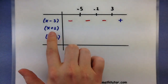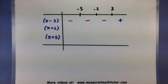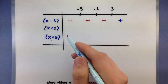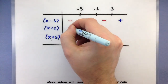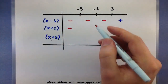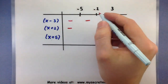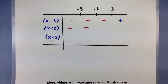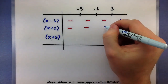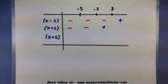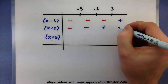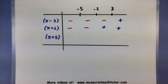Now let's do that for the other two factors. For x plus 2: something less than negative 5, add 2 — still negative. Negative 3 plus 2 — still negative. 0 plus 2 is positive. And something greater than 3 plus 2 — still positive.